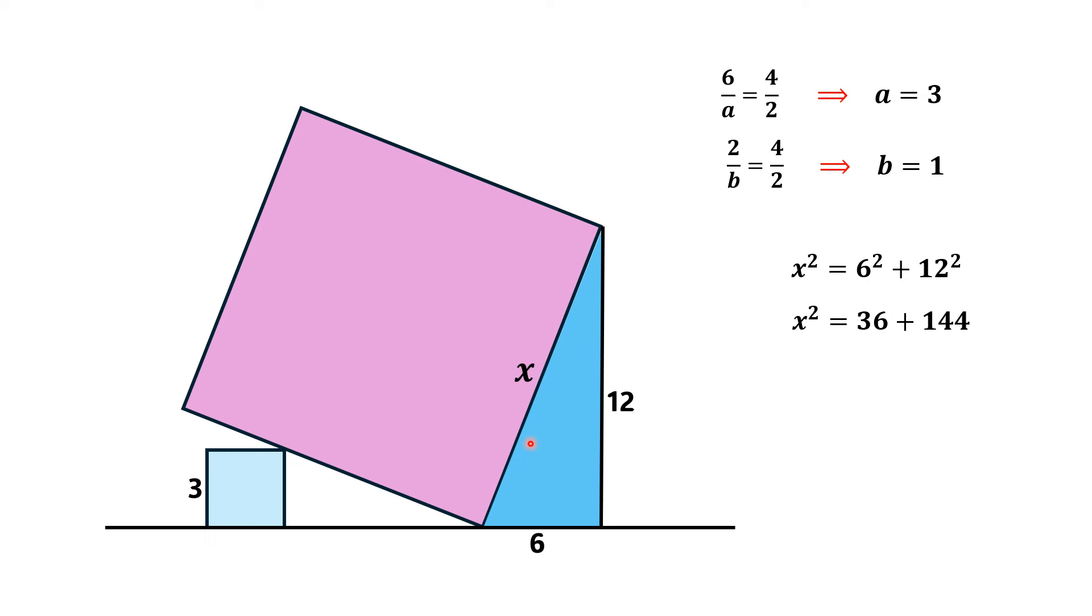And from here, x square is equal to 36 plus 144. That gives 180 square units, which is the area of this tilted square. And that is the answer. Thank you for watching.